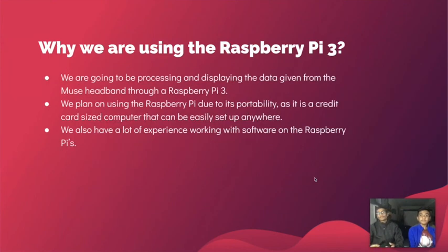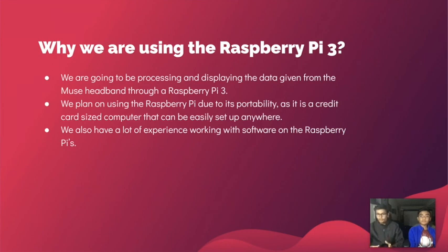Now let's go over why we're using a Raspberry Pi 3. Since we will be processing and displaying a lot of data from the Muse 2 headband, we thought a Raspberry Pi would be perfect as it is very portable and a small-size computer that can be easily set up anywhere. We also had a lot of experience working with software on the Raspberry Pi, which gave us an edge and made us more comfortable working on this type of project.